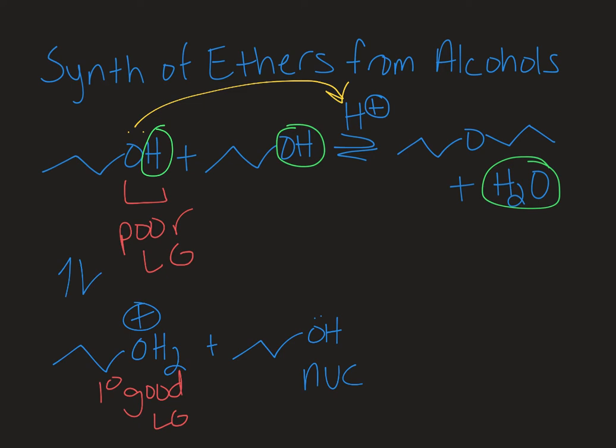So the lone pair of electrons on the oxygen atom that's neutral on my nucleophile is going to come in to the electrophilic carbon that has the water leaving group on it, and then this bond is going to break, and those electrons are going to go on to the oxygen. So this is an SN2 type reaction.